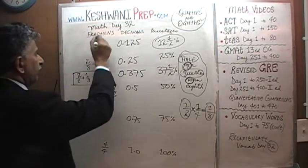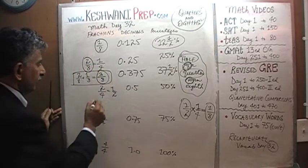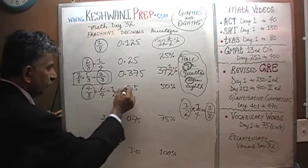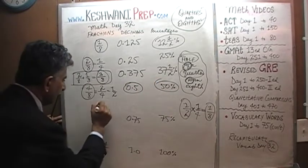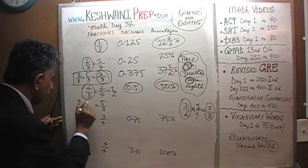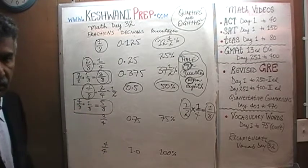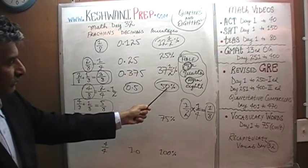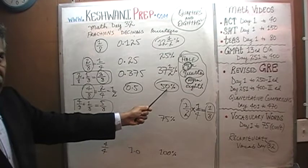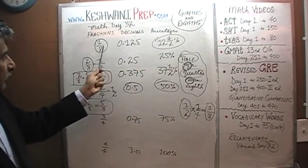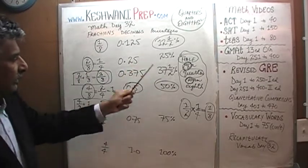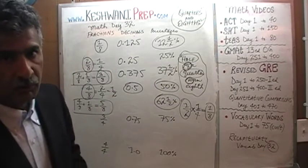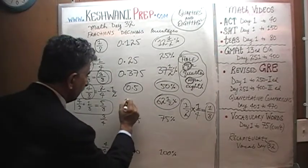Two over four can be written as four over eight — that's four eighths, which is 50 percent, or 0.5. Five eighths is four eighths plus one eighth: 50% plus 12.5% equals 62.5%. Every time, you take the previous value and just add 12 and a half percent to it. Five eighths converts to 0.625.